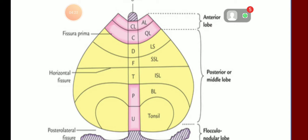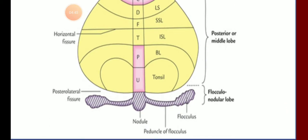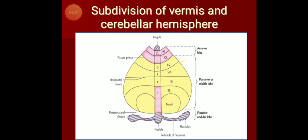Starting from above: Ela, quadrangular lobule (QL), lobulus simplex (LS), superior semilunar lobule (SSL), inferior semilunar lobule (ISL), biventral lobule (BL), tonsil, and finally the flocculus. These are the subdivisions of the cerebellar hemispheres and vermis.